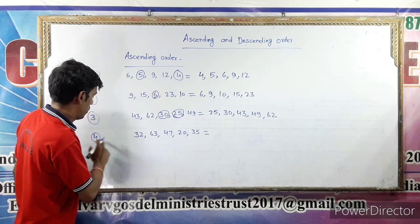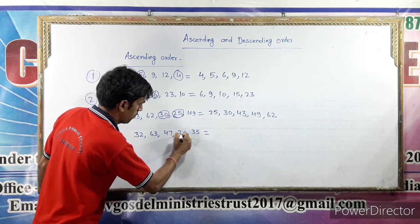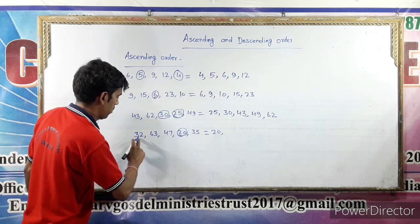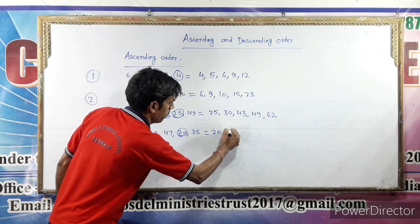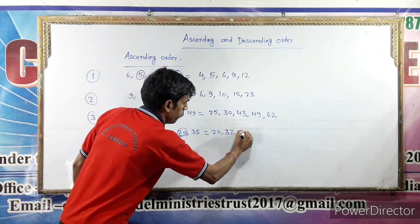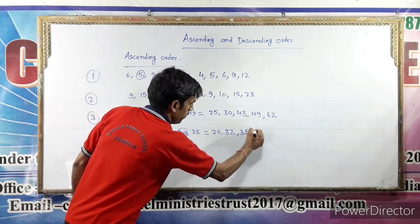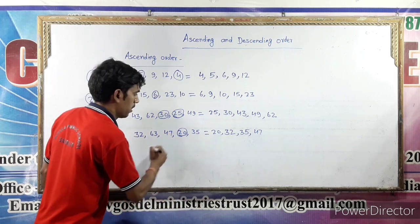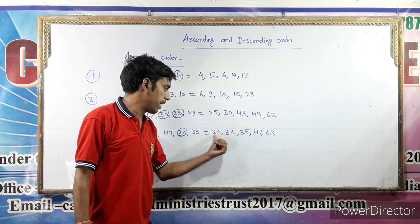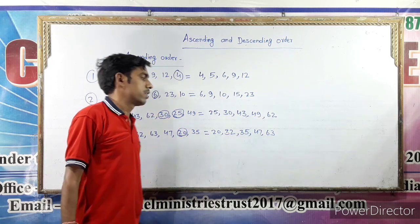Last example. The smallest number is 20. Next: 32, 35, 47 and 63. So ascending order: 20, 32, 35, 47 and 63.